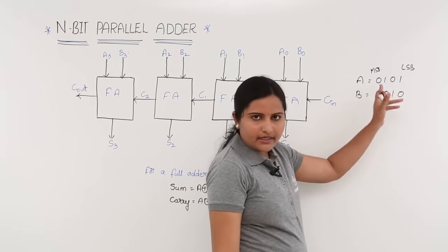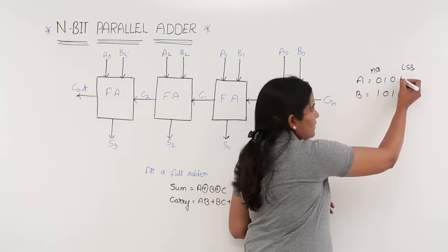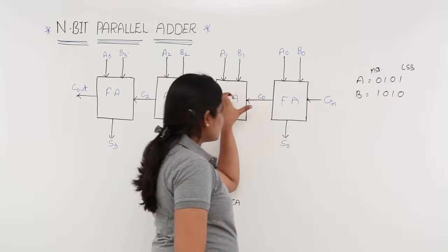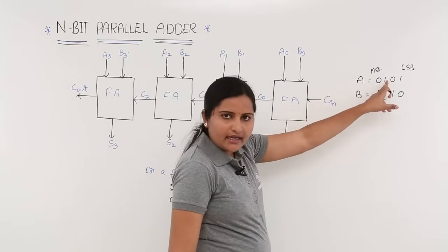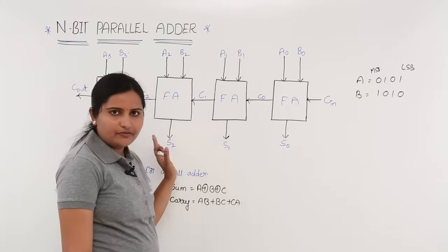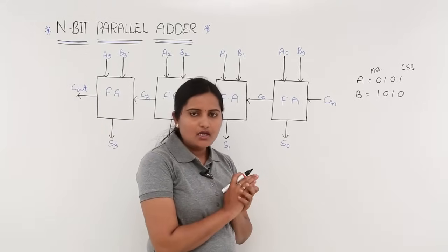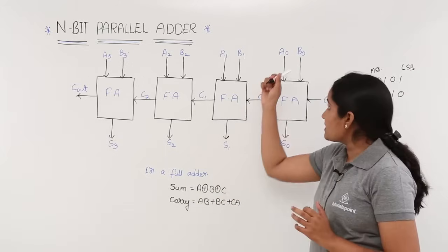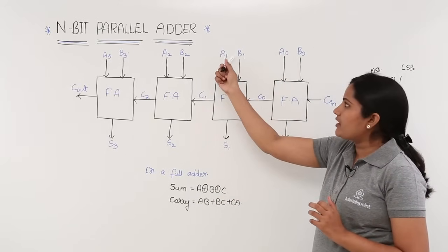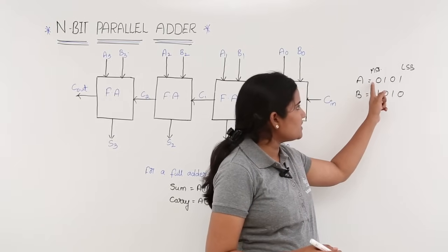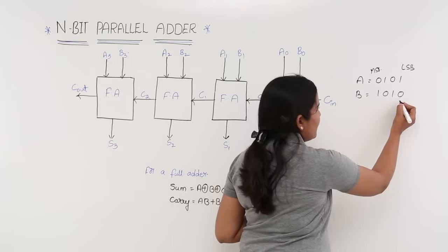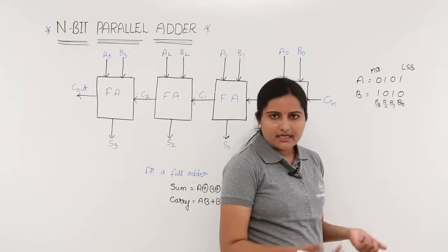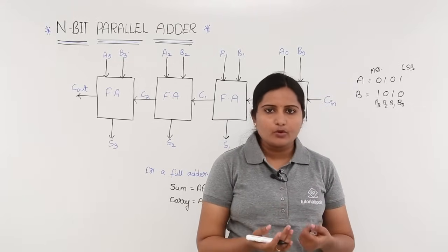For each corresponding pair of bits you need to add using a full adder. Here you are adding a0 and b0 using the first full adder, a1 and b1 using the second full adder, and so on for the third bits using the third full adder. The LSB bit is considered as a0, followed by a1, a2, and a3. Similarly, this is b0, b1, b2, and b3, where b3 is the most significant bit.